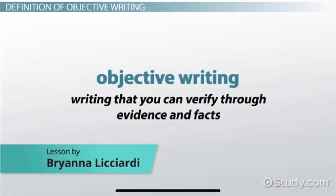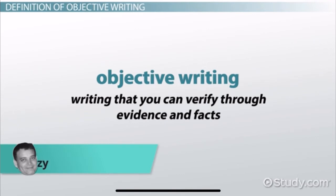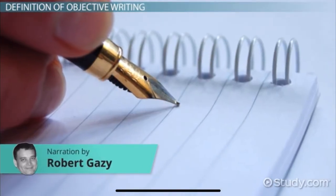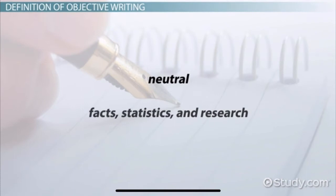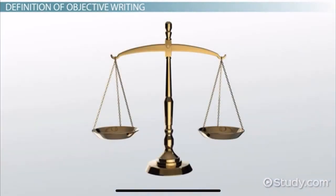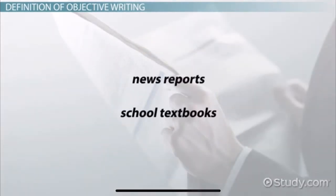Objective writing is writing that you can verify through evidence and facts. If you are writing objectively, you must remain as neutral as possible through the use of facts, statistics, and research. This type of writing is best used when you, as a writer, need to present unbiased information to an audience and then let them determine their own opinion. News reports and school textbooks often use objective writing.